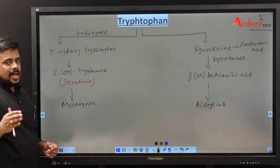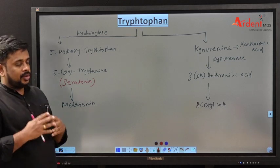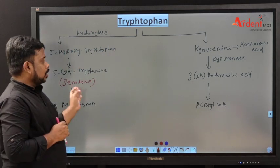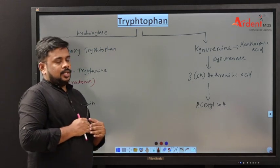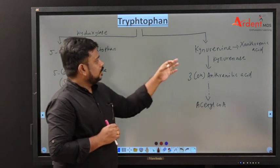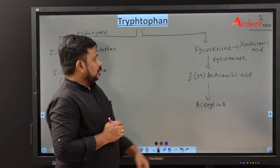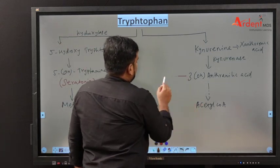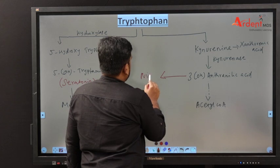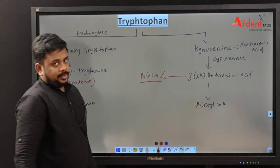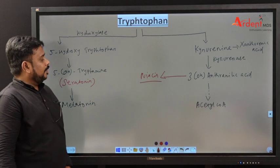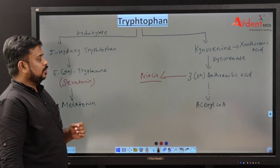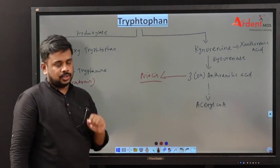Coming to the last aromatic amino acid — tryptophan. Tryptophan may go through two important pathways. In the first pathway, the kynurenine pathway, it is converted through 3-hydroxy intermediates and helps in the synthesis of niacin, which is a vitamin. In case of tryptophan deficiency, niacin deficiency also occurs.